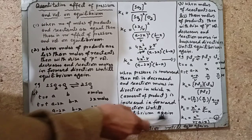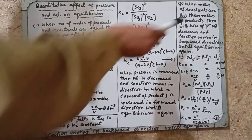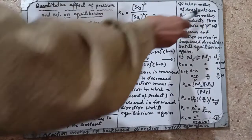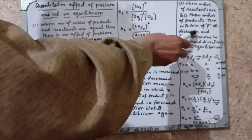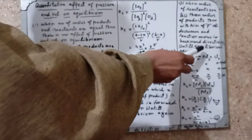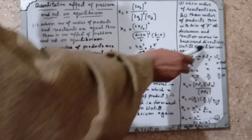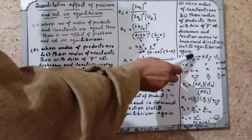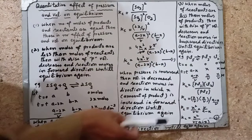When moles of reactants are less than moles of products, then with rise of pressure, volume decreases and reaction moves in the backward direction, until equilibrium is reached again.